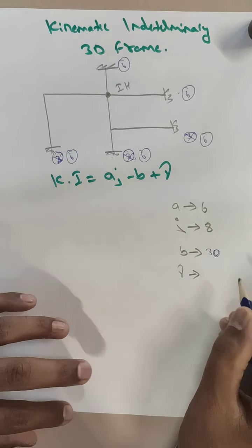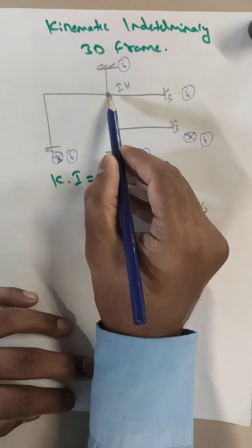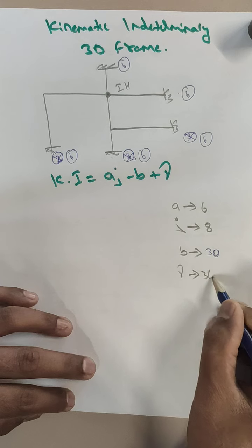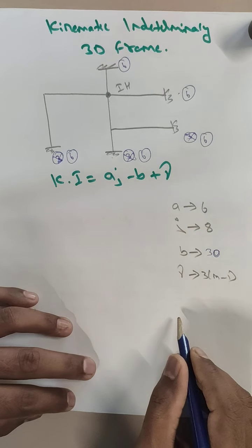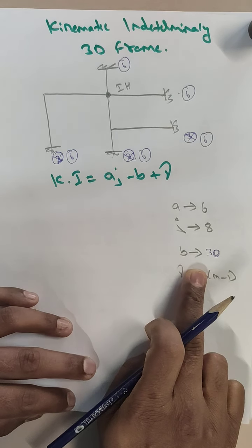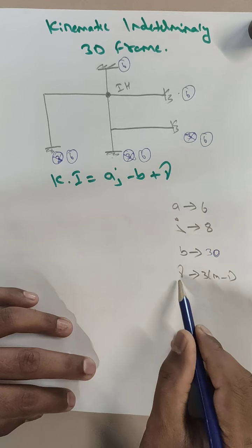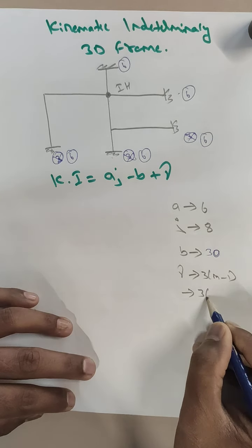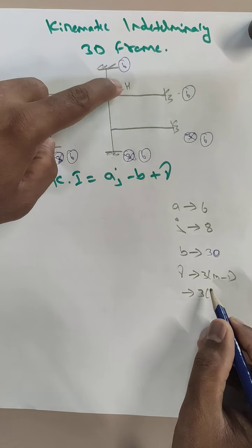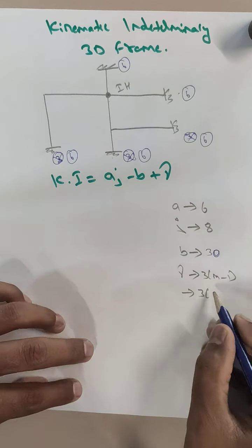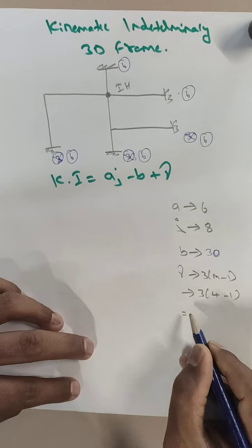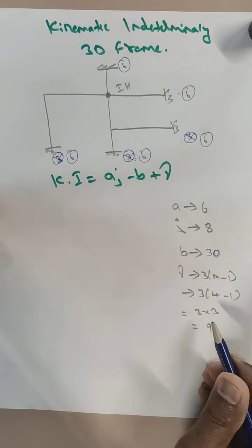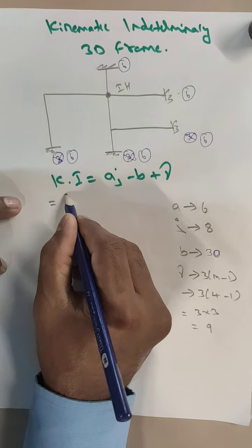Gamma (γ) is the number of releases. Here we have an internal hinge, and for a 3D structure, γ = 3(m - 1), whereas for 2D it is (m - 1). Here we have 4 members at the internal hinge, so γ = 3 × (4 - 1) = 3 × 3 = 9.